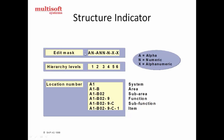This is the structure indicator which we will create for functional locations, and this is what the edit mask is. The edit mask indicates A, N, X — meaning alphabet, numeric, and alphanumeric. So one structure example is A-N-A-N-N-N-X-X, and this represents the hierarchical level.